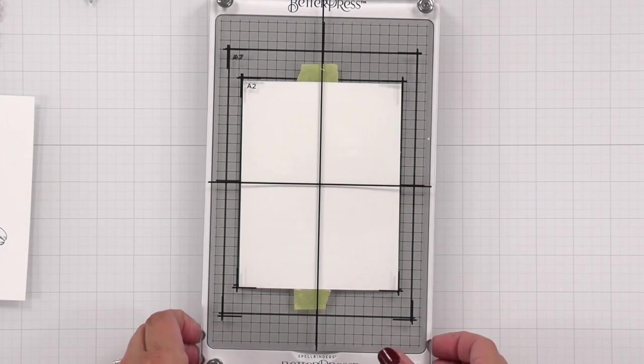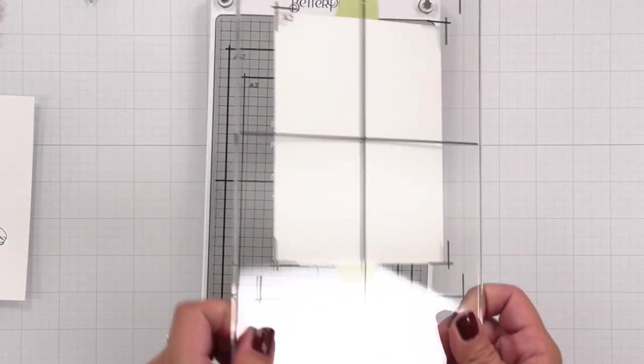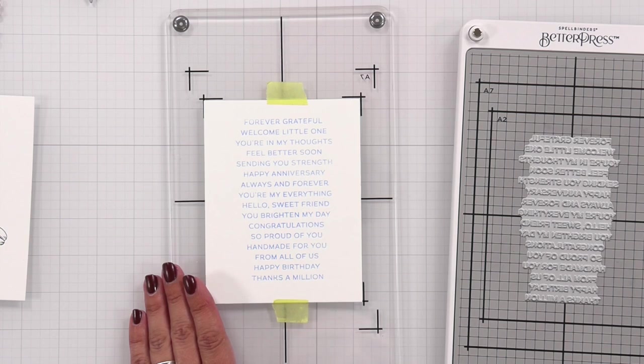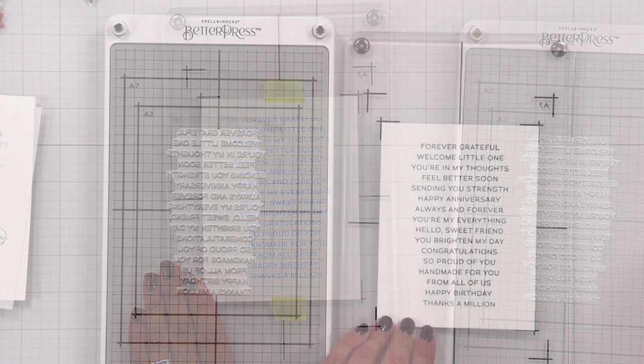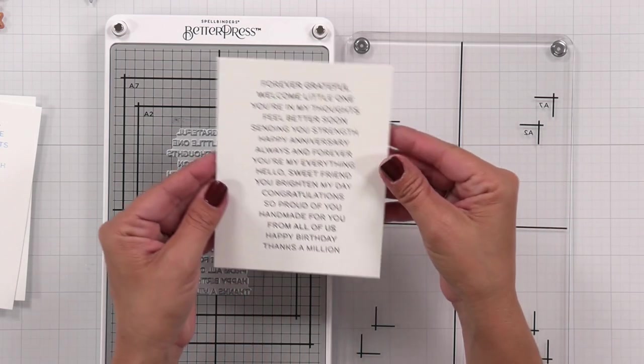Now they do offer on their website, it's in the FAQ section, information about how you would be able to use different die cut machines. So if you don't have a Platinum 6, they do offer information about how to use this with those machines.